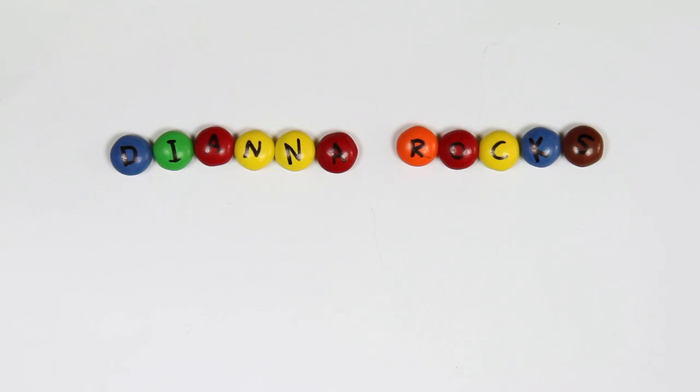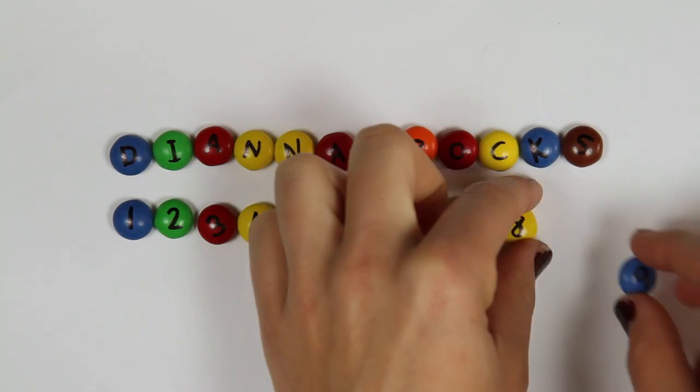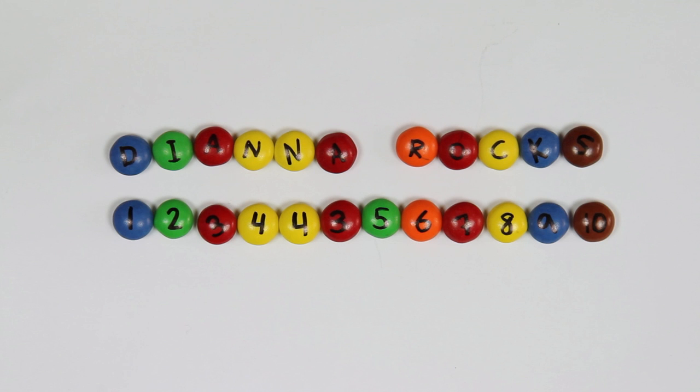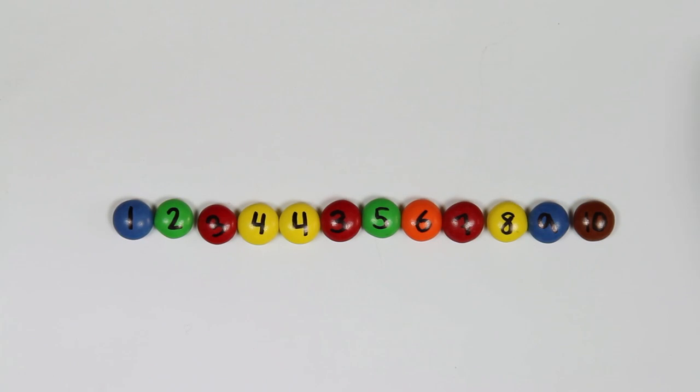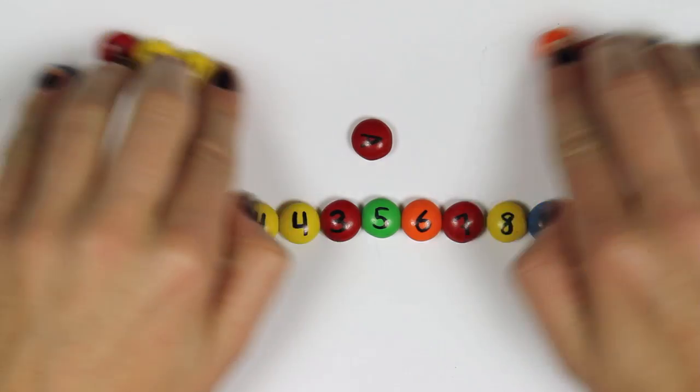Imagine I want to send the message Diana Rocks to another secret agent Sophia. I'm going to use this math. First I substitute the letters in my message for bits like we did in our easy Scooby-Doo code. If we were using binary, Diana Rocks would look like this. But we'll just use 1, 2, 3, 4, 4, 3, 5, 6, 7, 8, 9, 10. The 5 is for the space. And the conversion key from numbers back to letters is publicly known. No surprises yet.